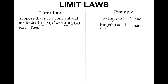All right, so we have what are called the limit laws. On the left-hand side I'm going to have the general limit law, and on the right we're going to do an example of that limit law. For the limit laws, you need to suppose that c is some constant and that the limits as x approaches a of f of x and g of x exist. For the example, we're going to use the fact that the limit of f of x as x approaches 1 equals 4, and the limit of g of x as x approaches 1 equals negative 1.